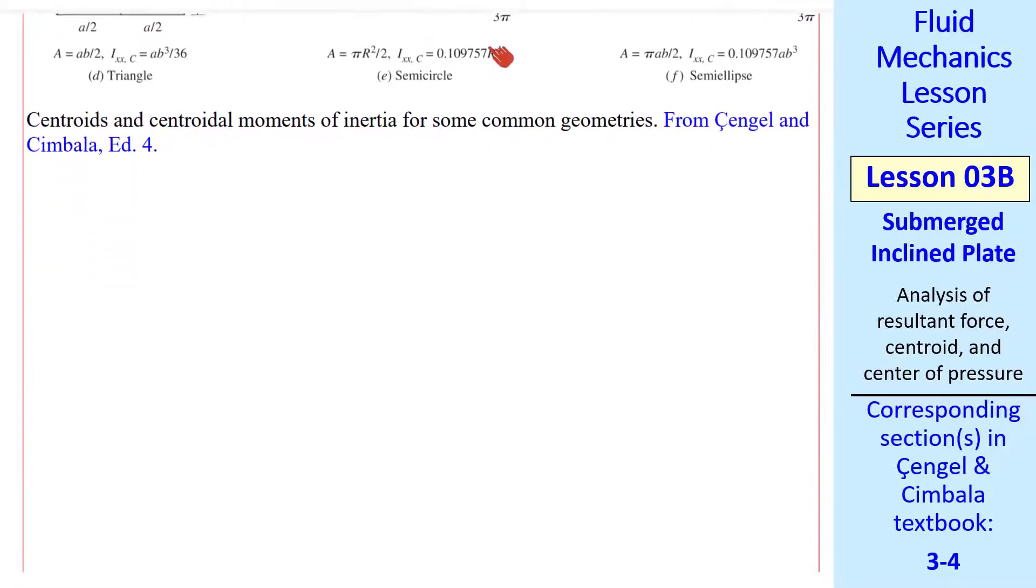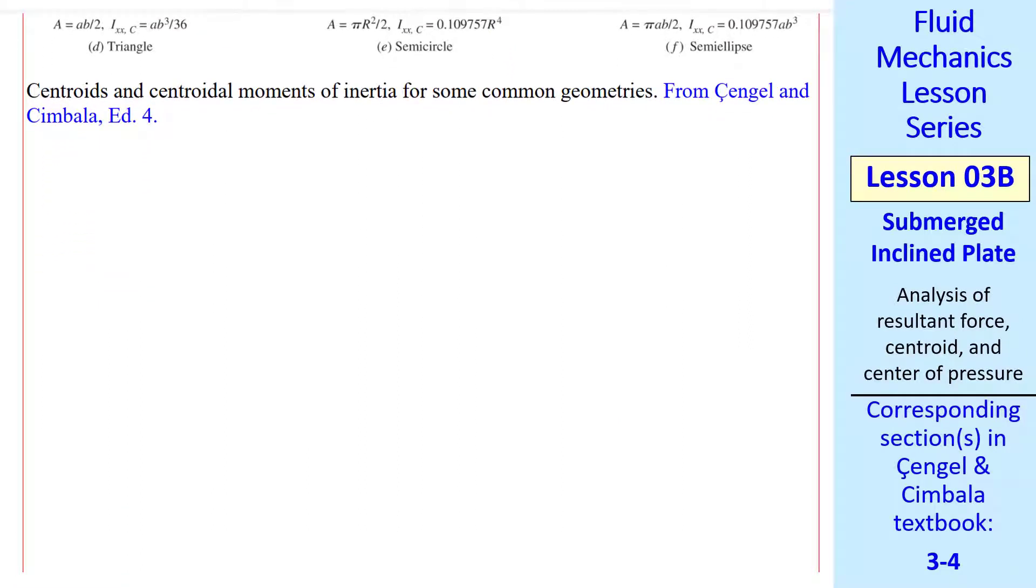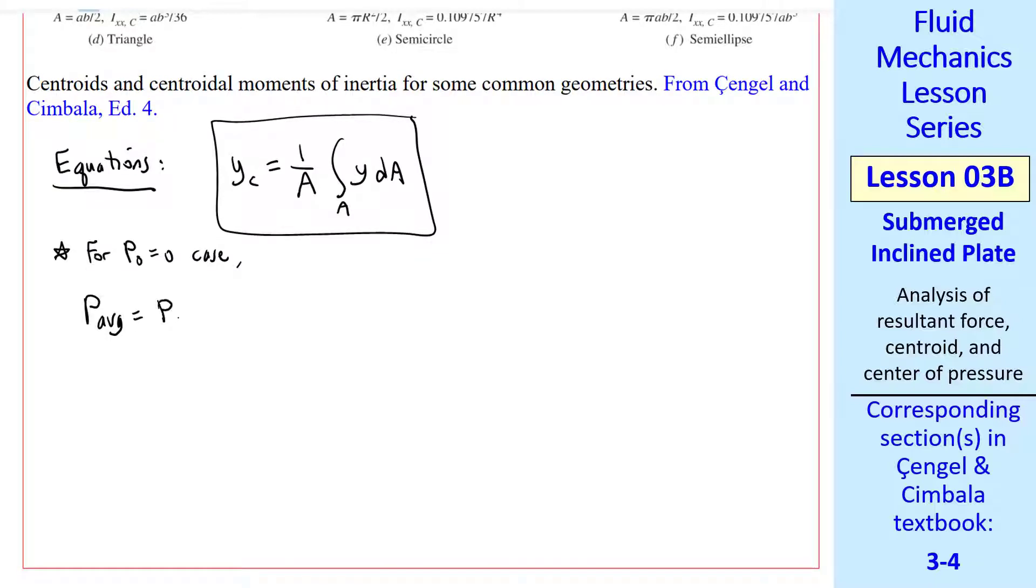So to solve these general cases with a non-rectangular plate, we use these equations. YC is 1 over A times the integral of YdA. For the P naught equals 0 case, which is the simplest case using gauge pressure, P average is P at the centroid, equal P at YC, equal rho G YC times sine theta. Where our notation, again, is that YC is the distance parallel to the plate from the surface to the centroid.